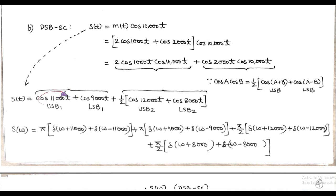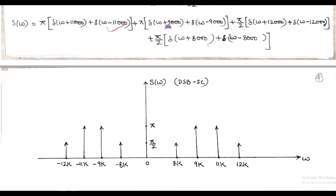Using the Fourier transform, ST gets converted into S(ω), which equals π[δ(ω+11000) plus δ(ω−11000)] plus π[δ(ω+9000) plus δ(ω−9000)] plus π/2[δ(ω+12000) plus δ(ω−12000)] plus π/2[δ(ω+8000) plus δ(ω−8000)]. So we have impulses of value π/2 at ±8000 and ±12000, and impulses of value π at ±9000 and ±11000.